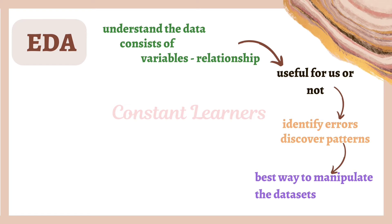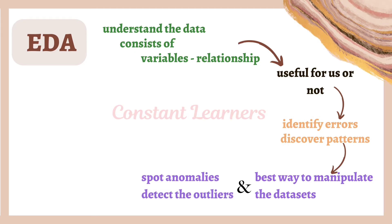Once the patterns have been identified, they help data scientists determine the best possible way to manipulate the data sets. This complete process of data analysis is used for building models, analyzing big data, and automations. Exploratory data analysis also helps spot anomalies and detect outliers. After the data has been understood, variables and relationships identified, usefulness assessed, and errors detected, data scientists then formulate a hypothesis.